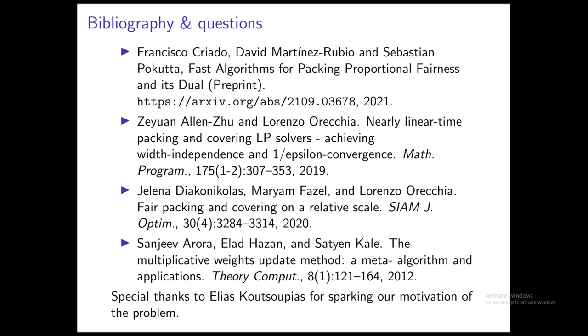For selective bibliography: our archive article is available for those interested. Key related works include the Alenzu-Orecchia article on the zero-fair packing problem — incredibly fast for that class of linear programs — the article on the alpha-fair case from which we got the reparameterization, and the article providing our particular variant of PST that we had to modify. Finally, I'd like to thank Elias Koutsoupias, because the idea of thinking about Yamnitsky-Levin in terms of a packing problem was originally his. Thank you very much.